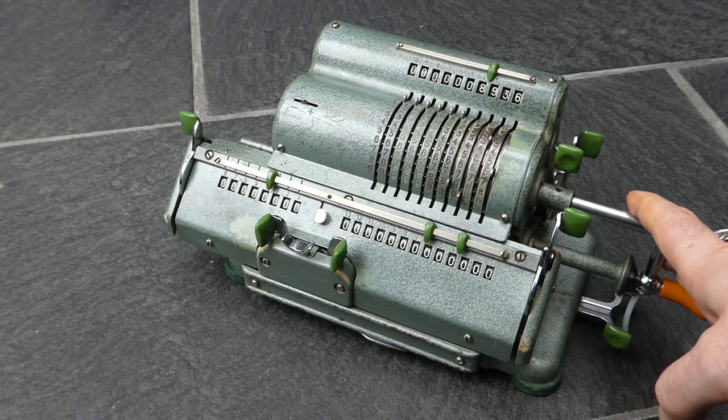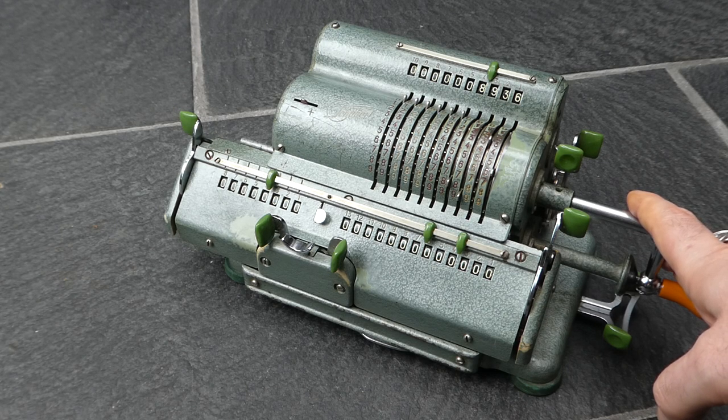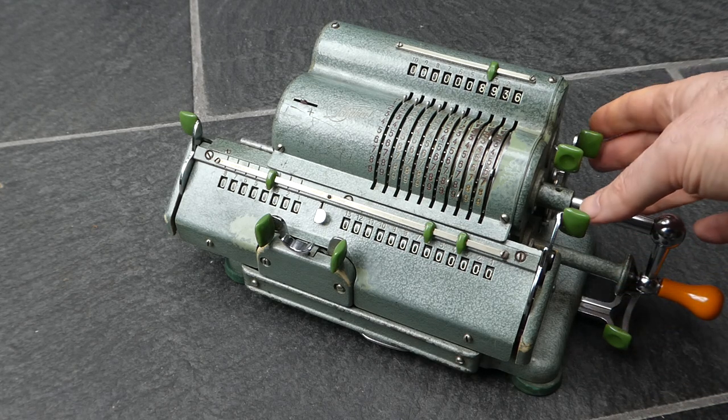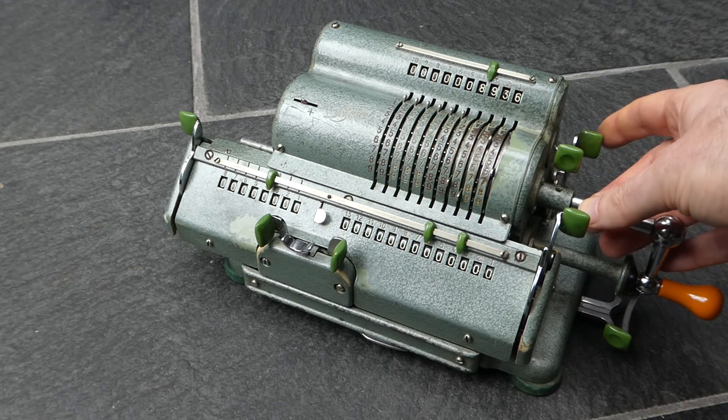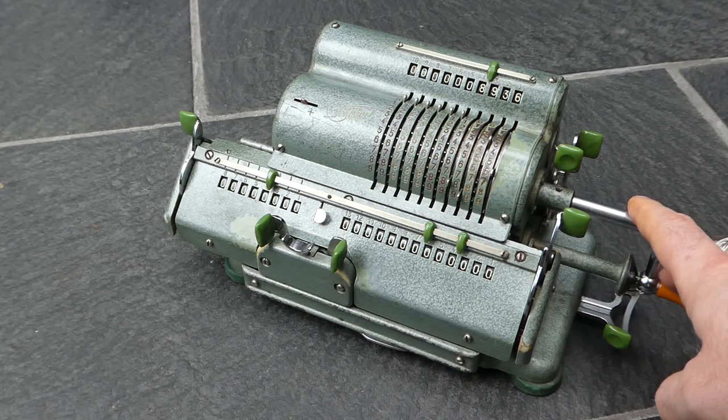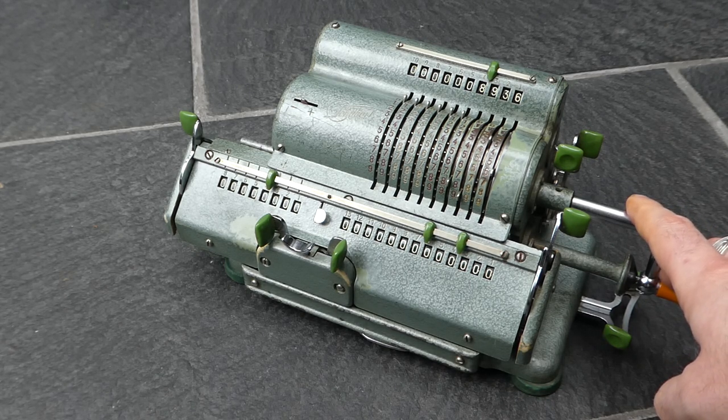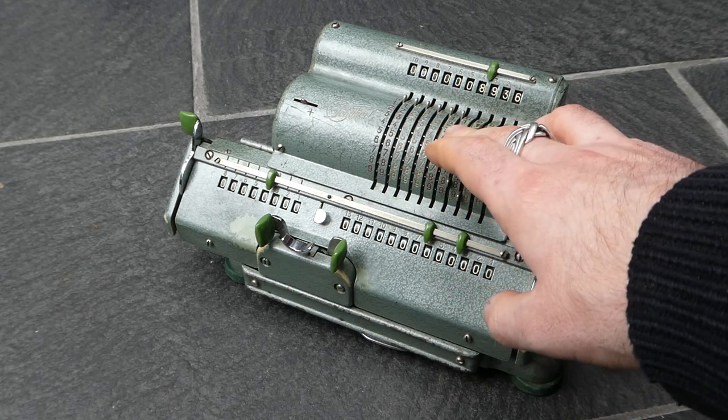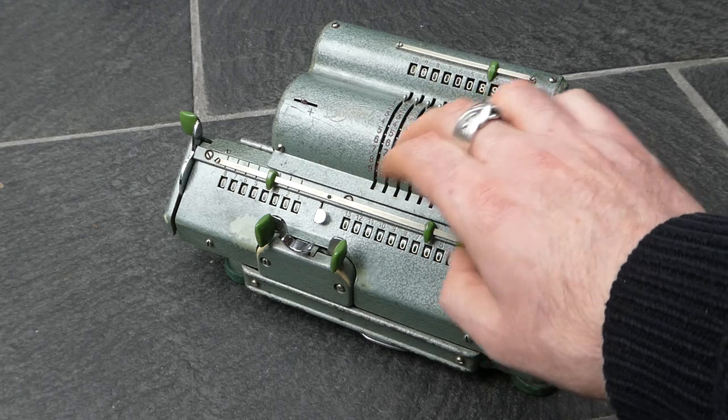The first machines were models A and B, and also AR and BR. The R meant that it had the back transfer mechanism, and the A and B are simply two different capacities. I think the A was the smaller one with only six digits in the input and in the counter.